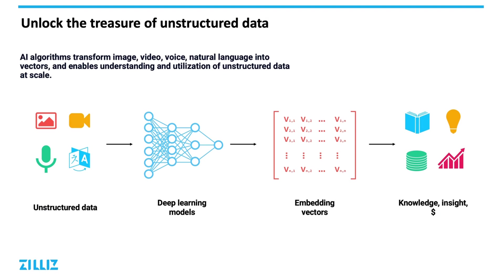When dealing with structured and semi-structured data, we can use tools such as relational databases and text-based search engines. On the other hand, when dealing with unstructured data, we did not have the tools until very recently with the introduction of deep learning models. The charm of deep learning models is that they can convert unstructured information that computers can't understand into feature information that they can easily process.